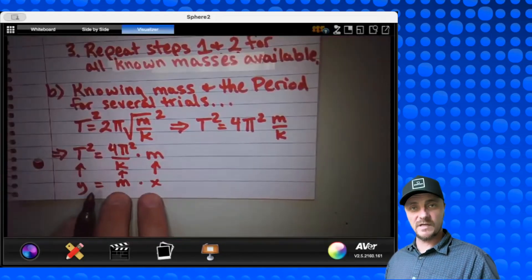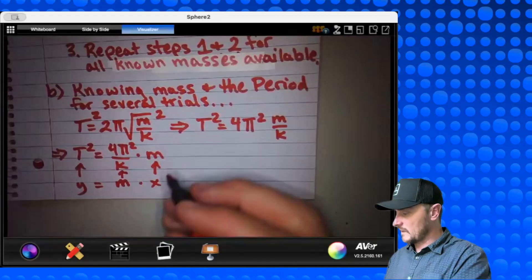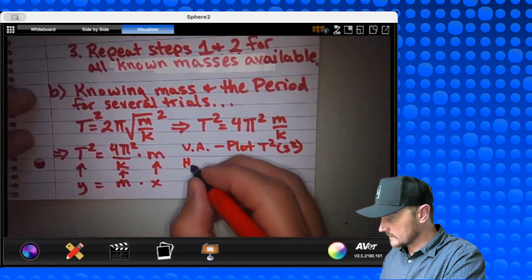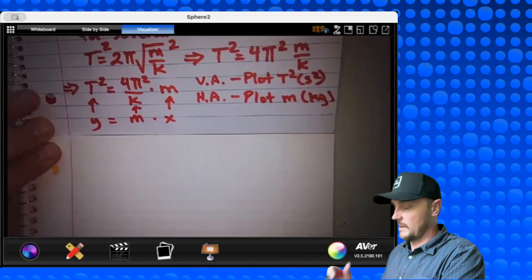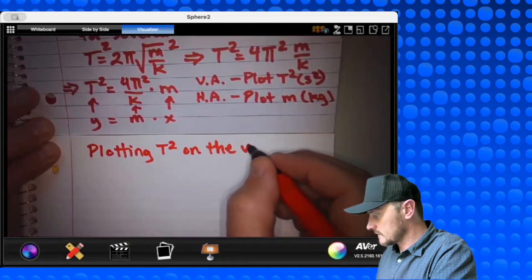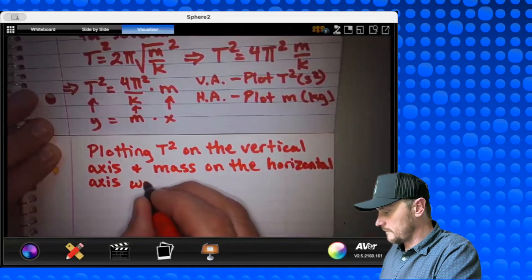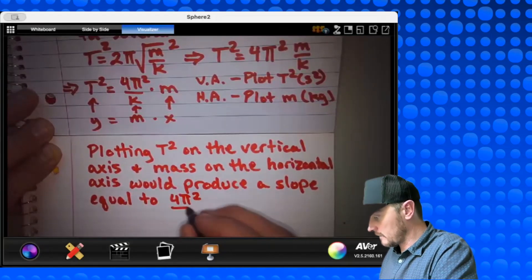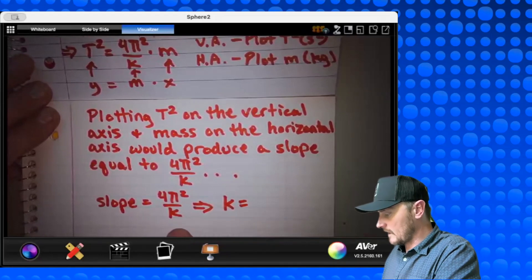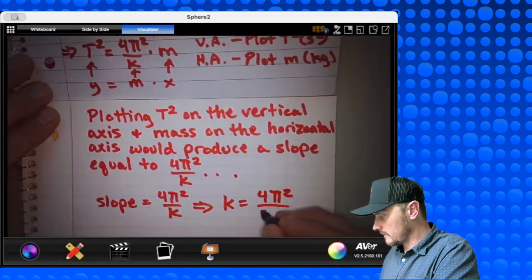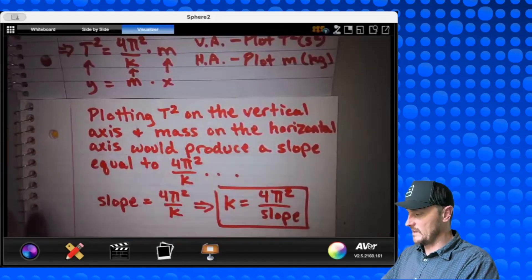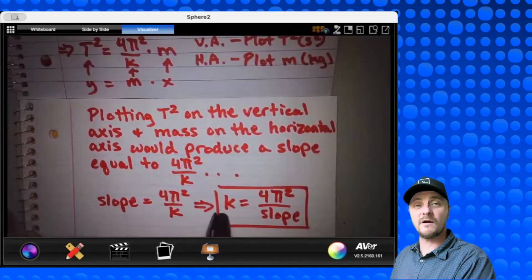At this point, I hope you can see what I'm going for. I'm saying let's put T squared on the y-axis. Let's put M on the x-axis. And our slope then would involve a quantity from which we can find K, the spring constant. So I would show the reader exactly this visualization. And if you think they need just a little bit more, you could say vertical axis, which is the y-axis, plot T squared, which is in second squared. For the horizontal axis, we're going to plot mass, which is in kilograms. Plotting T squared on the vertical axis and mass on the horizontal axis would produce a slope equal to 4 pi squared over K. Slope equals 4 pi squared over K. Solving for K, we would get K equals 4 pi squared over the slope. So that's pretty convincing.